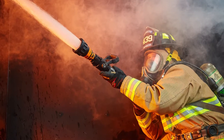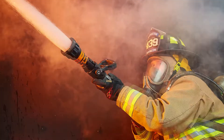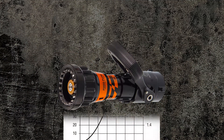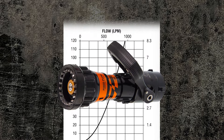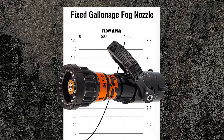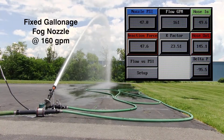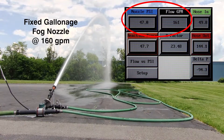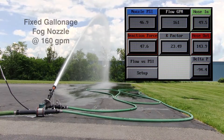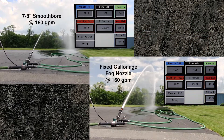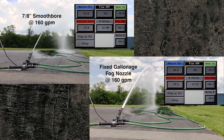In this episode, we will use a fixed gallonage fog nozzle and show that not only does it follow the exact same curve as the smoothbore, but that the same formula can be used to calculate flows and pressures. Here, the fixed gallonage fog nozzle is flowing at about 160 GPM at about 50 PSI. As you can see, the 7/8 inch smoothbore and the fixed gallonage fog nozzle are flowing almost identically to each other.